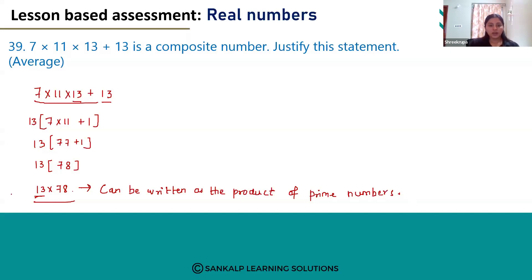And also, it has factors as 13 and other numbers, not only 1 and the number itself. But there are different factors for this number. That is why we can say this is a composite number.